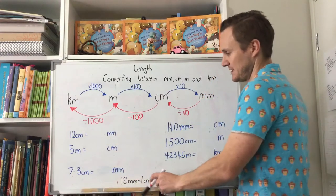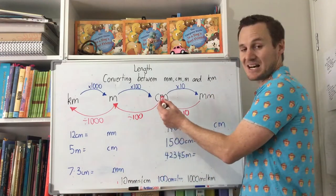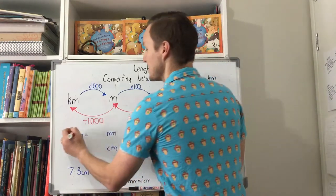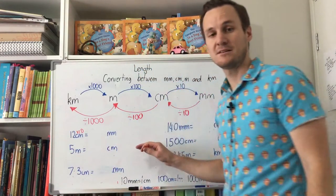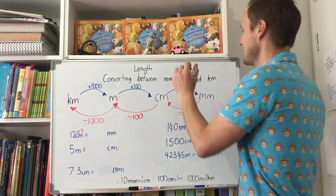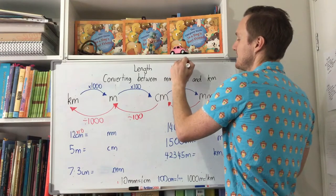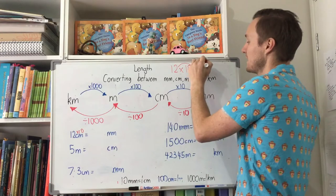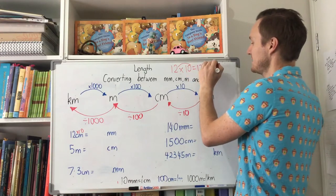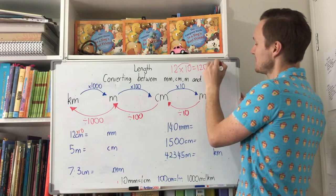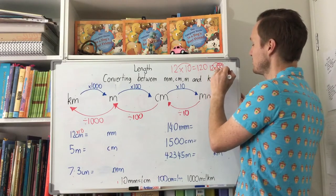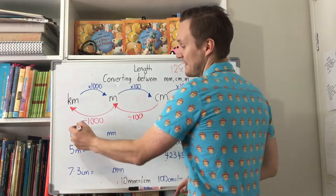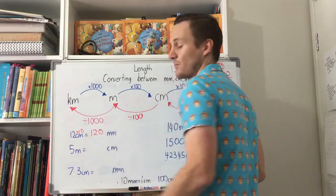Let's give it a go. Firstly, 12 centimetres into millimetres. If I look at my chart, for 12 centimetres into millimetres that number is going to be getting bigger, and it says we're going to times it by 10. So 12 times 10 — remember, when you times anything by 10, you can just take that zero and put it on the end, so it becomes 120. If you were timesing 12 by 100, you'd add both zeros and it'd be 1200. So 12 times 10 equals 120 millimetres.